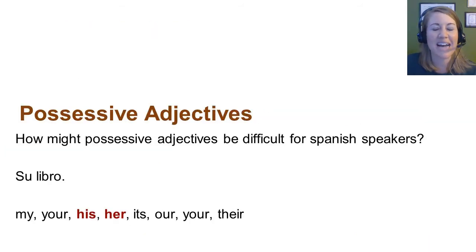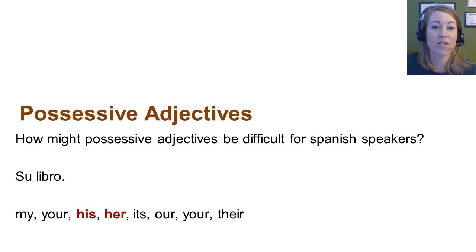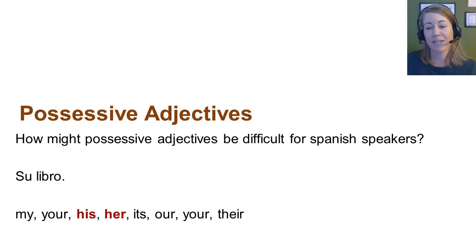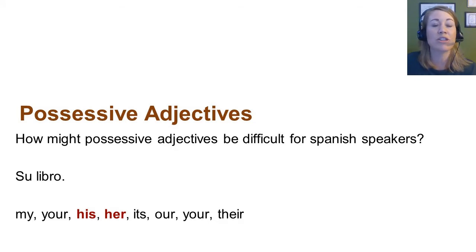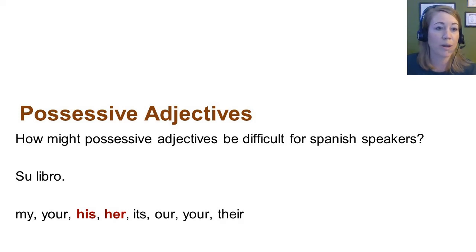To tie this to teaching: how might possessive adjectives be difficult for Spanish speakers? In Spanish, when saying something is his or hers, they use the pronoun 'su' — for example, 'su libro' — and 'su' can mean his or her; it's not gender-specific. So when a Spanish speaker is learning English, this might be a type of pronoun they struggle with, because in their first language there is no gender-specific pronoun to mean his or her. It's just 'su' — one pronoun.